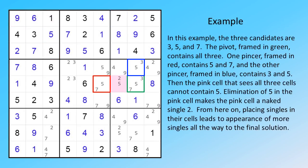In this example, the three candidates are 3, 5 and 7. The pivot, framed in green, contains all three. One pincer, framed in red, contains 5 and 7, and the other pincer, framed in blue, contains 3 and 5.